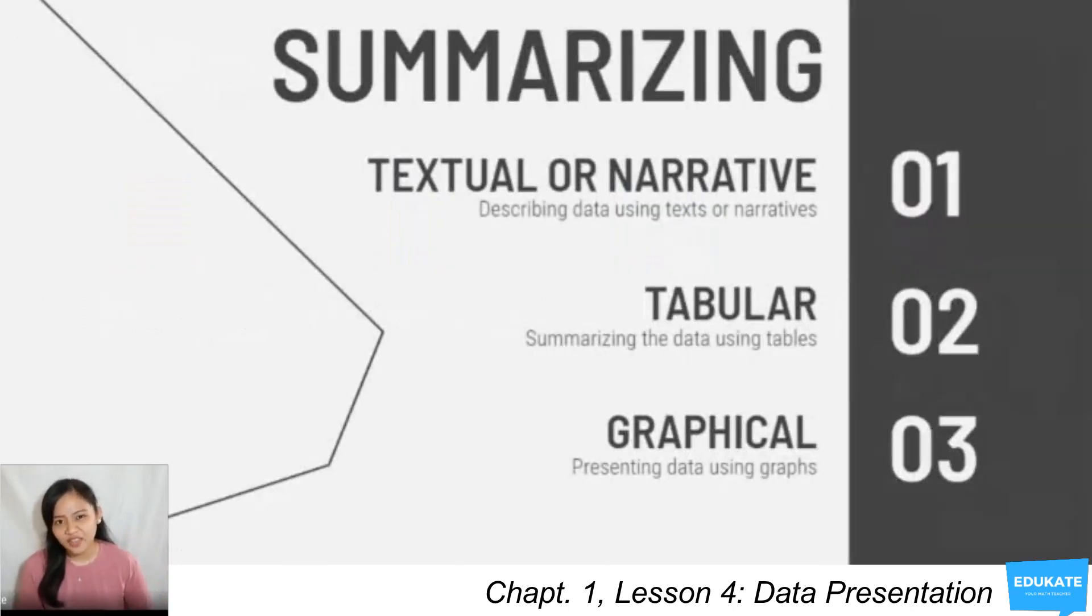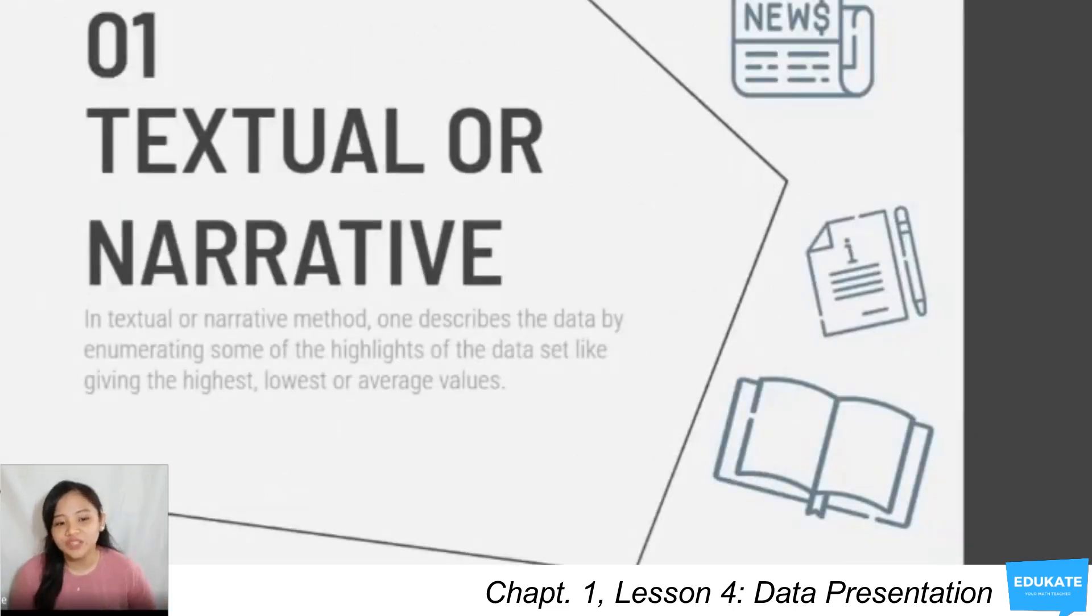For summarizing, there are three types to summarize data: textual or narrative, tabular, and graphical. Textual or narrative means describing data using text or narratives. Tabular means we summarize the data into tables, while graphical means we present data using graphs. In textual or narrative method, one describes the data by highlighting some important parts of the data, like giving the highest, lowest, or average values.